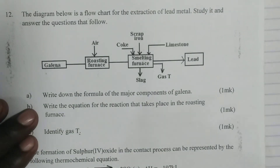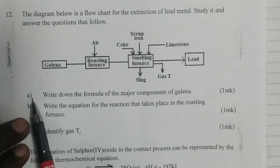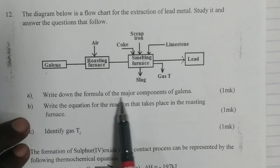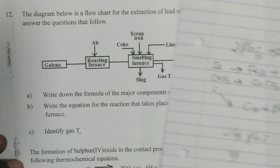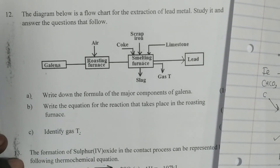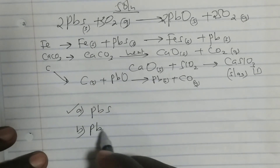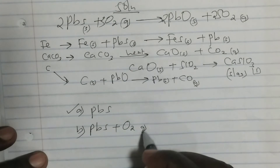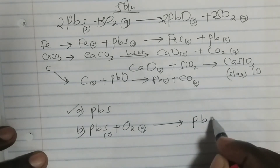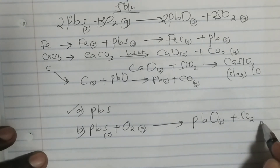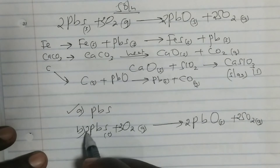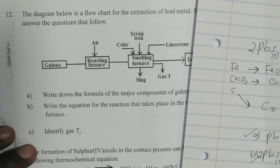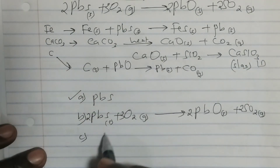Let us go through the questions. Part A: write down the formula of the major component of galena. The major component of galena is lead sulfide, PbS. Part B: write the equation for the reaction that takes place in the roasting furnace — lead sulfide is burnt in air to give lead-2-oxide plus sulfur dioxide gas, and we have balanced the equation above. Part C: identify gas T — gas T is carbon monoxide (CO).